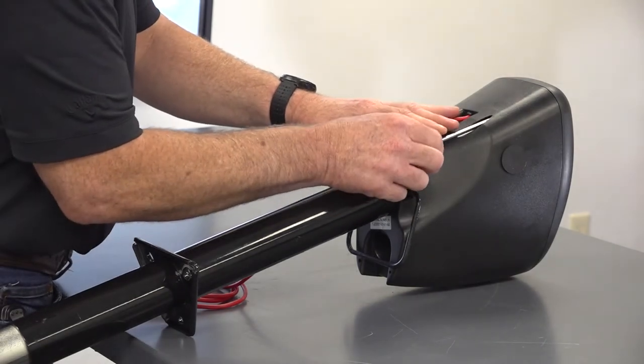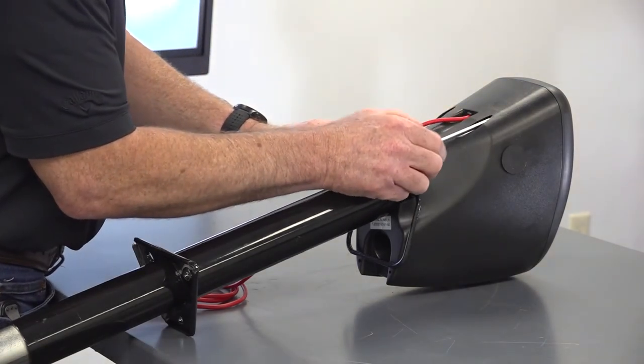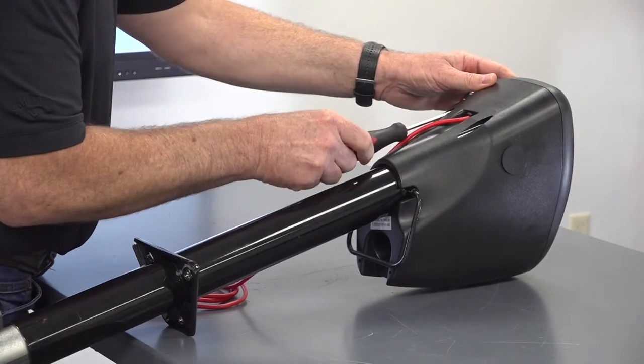Using a Phillips-head screwdriver, remove the two retaining screws from the rear of the PowerStance Tongue Jack's head cover assembly.